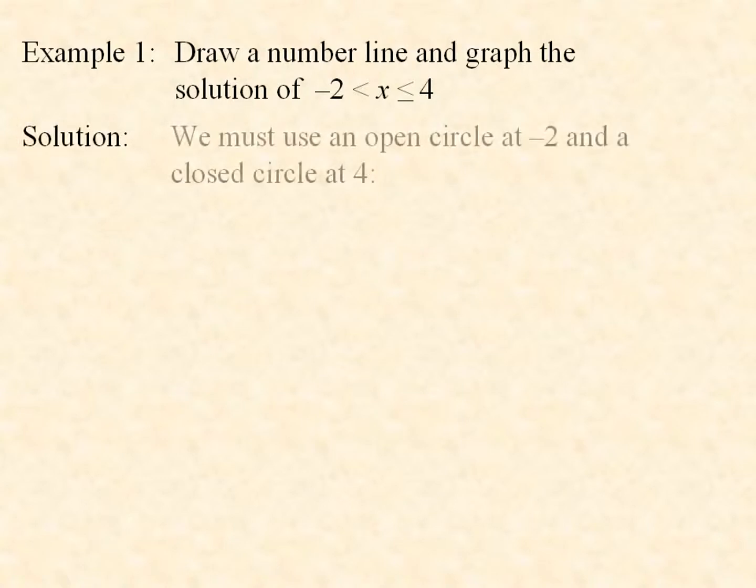Example 1. Draw a number line and graph the solution of -2 < x ≤ 4. We must use an open circle at -2, because that's not included, and a closed circle at 4, because of the equals there. So we get this graph. x is between those two numbers and could equal 4.